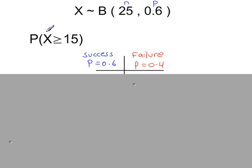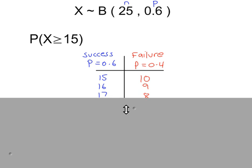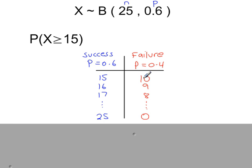On the left-hand side, we're looking at successes. So 15 or more, so you want 15, 16, 17, 18, going up to 25. And then on the right-hand side, you want the number of failures. So in 25 trials, 15 successes means 10 failures. 16 successes means you have 9 failures. Successes plus failures adds up to 25.